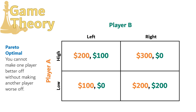The outcome at high left is not Pareto optimal even though it is a Nash Equilibrium. Player A is getting $200 and player B is getting $100, but we can make player B better off without making A worse off by moving to low right, where both players get $200. That outcome is Pareto optimal. Although we could make player A better off by moving to high right, that outcome makes player B worse off. So that outcome is also Pareto optimal. Low left is not Pareto optimal because we can make both players better off at low right.